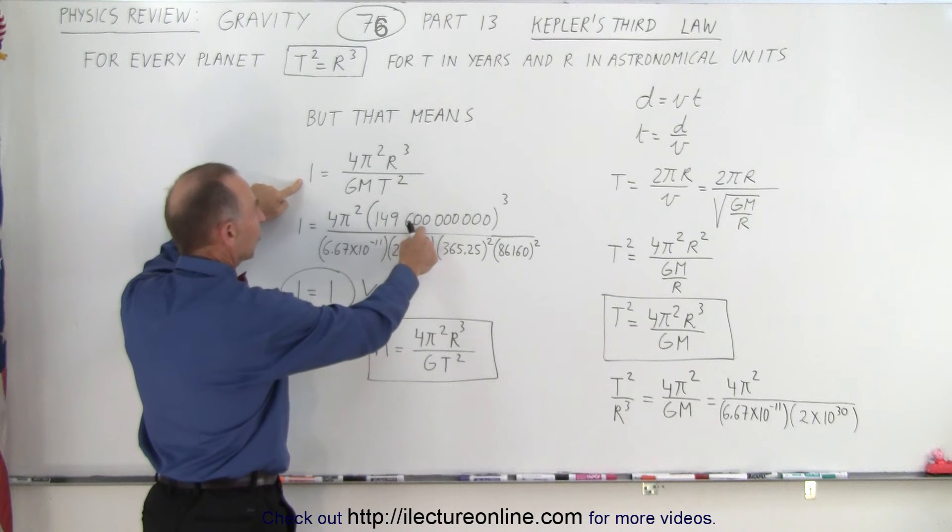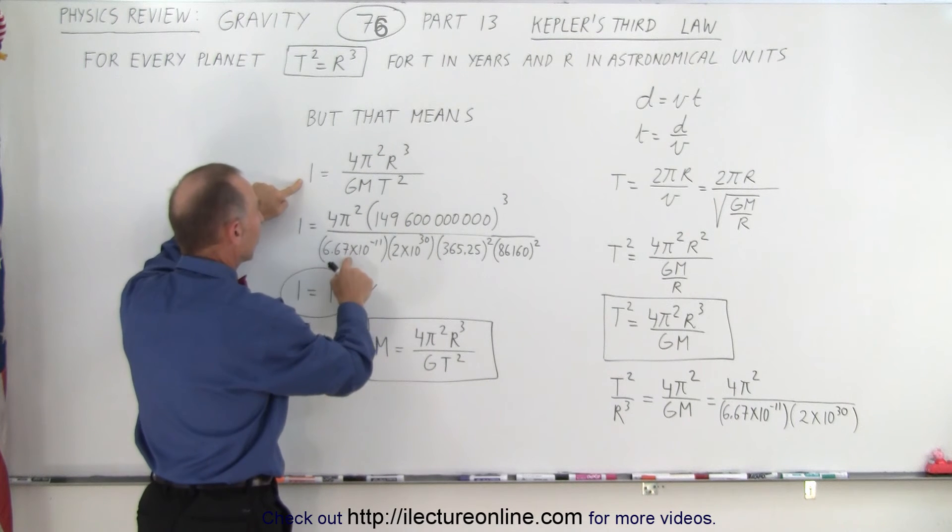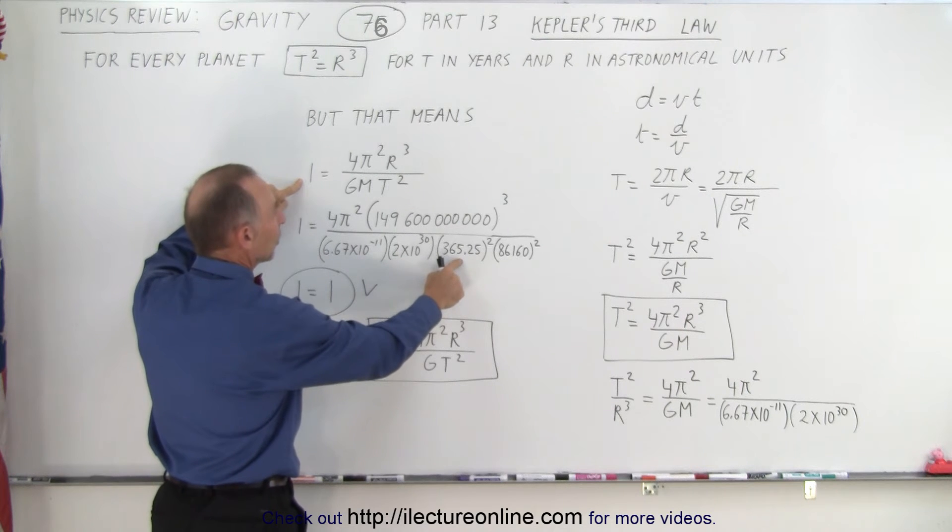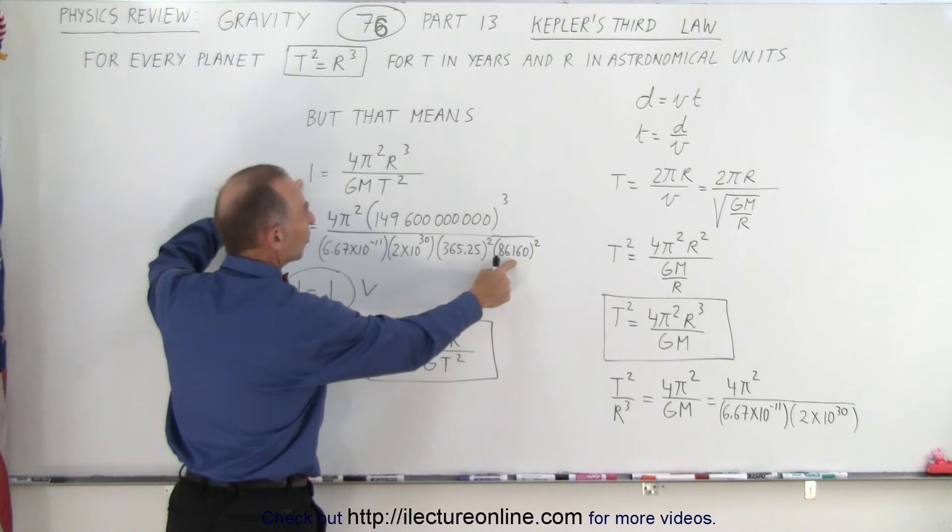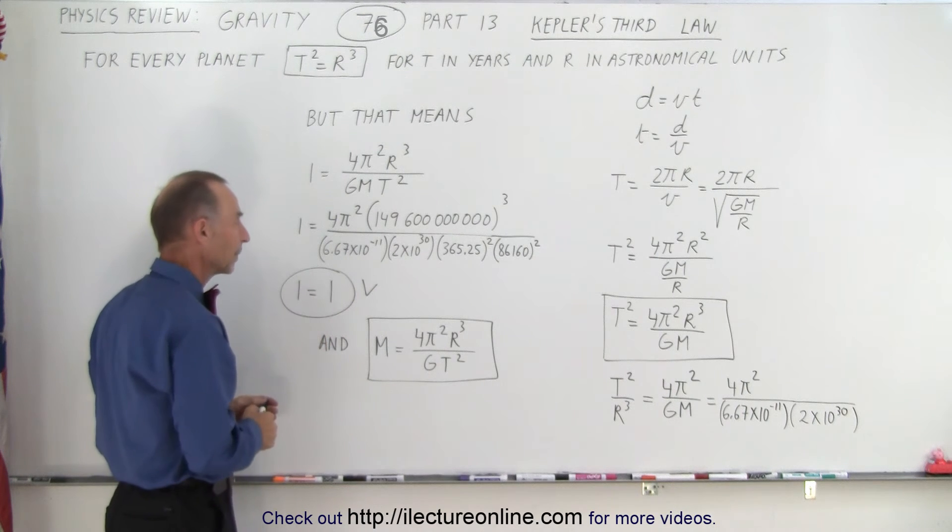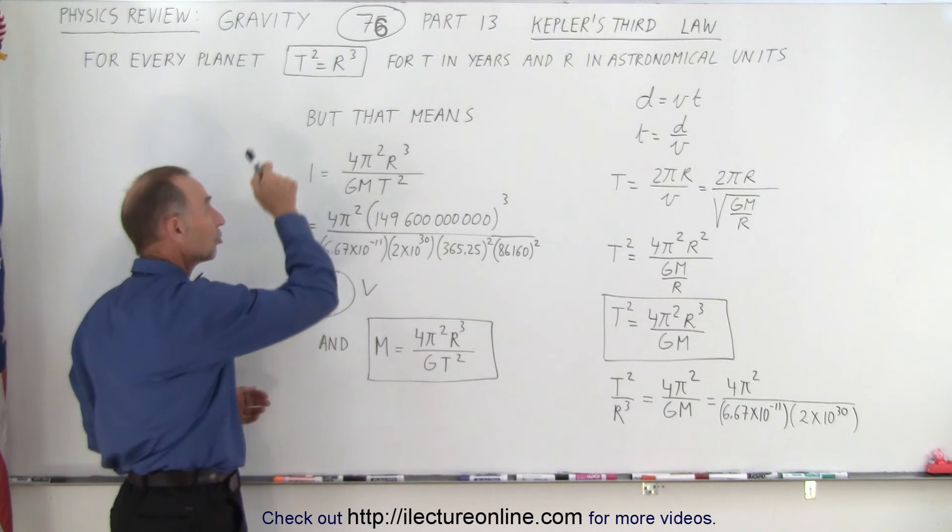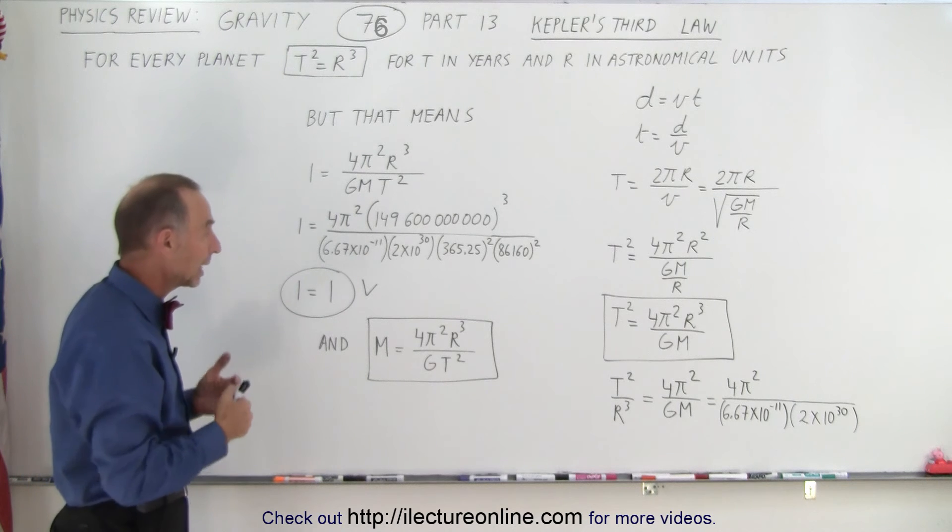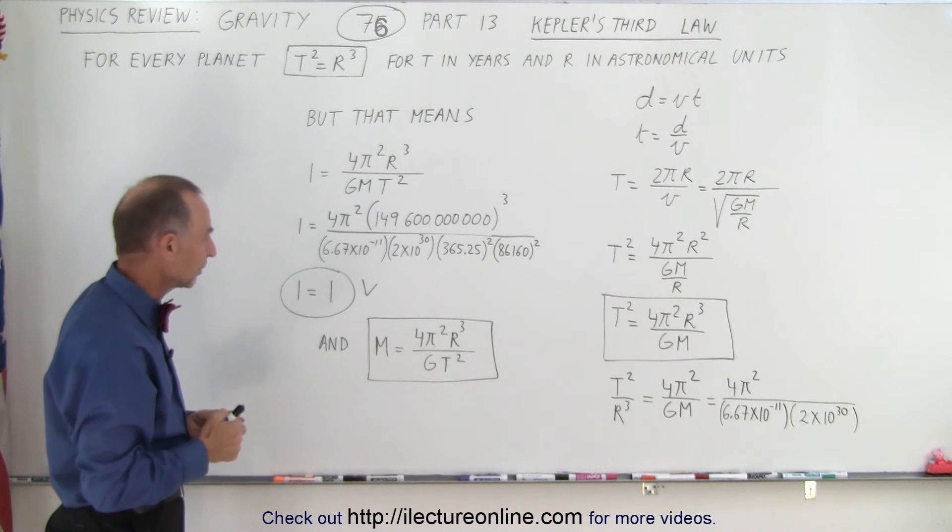In the case of the earth, that is the average distance between the sun and the earth, G the gravitational constant, the mass of the sun, the number of days in a year, and the number of seconds in a solar day, and yes indeed, 1 equals 1. That means that that relationship was indeed true, and that's what Kepler discovered.